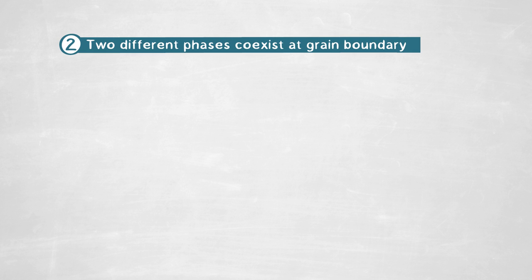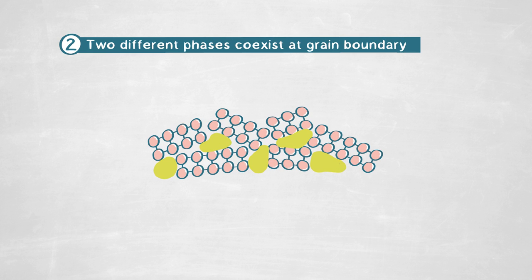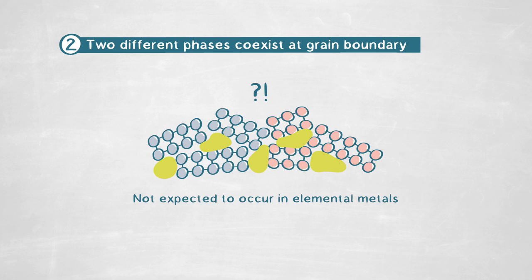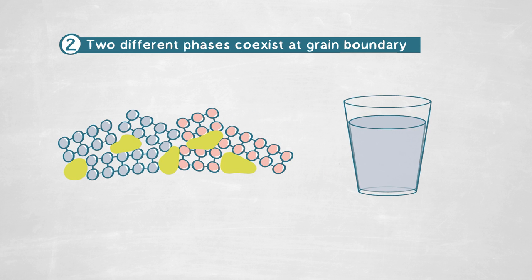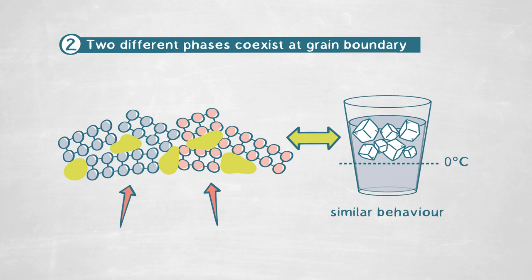We found two different phases coexisting at this grain boundary — the grain boundary decomposes into two grain boundary phases. This was not expected, especially not expected to occur in an elemental metal such as copper. Imagine water transforming from the liquid state to the solid state at zero degrees Celsius — it changes its state from liquid to solid. This is a similar behavior, but now occurring within the interface.